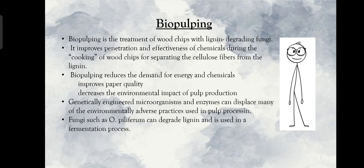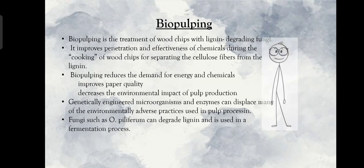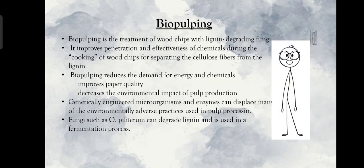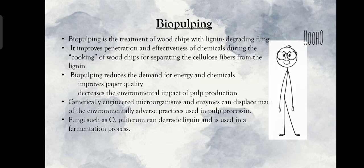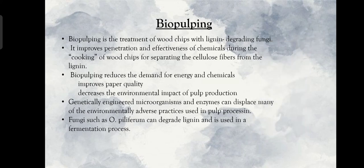Bio-pulping is the treatment of wood chips with lignin-degrading fungi. It improves penetration and effectiveness of chemicals during cooking of wood chips for separating the cellulose fibers from the lignin. Bio-pulping reduces the demand for energy and chemicals, improves paper quality, and decreases the environmental impact of pulp production.